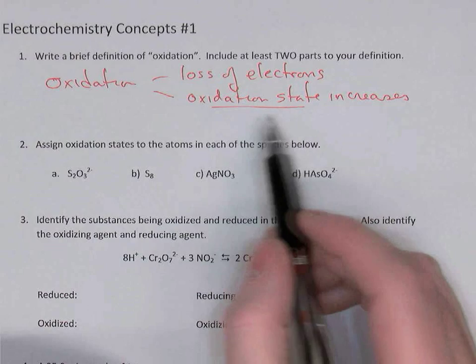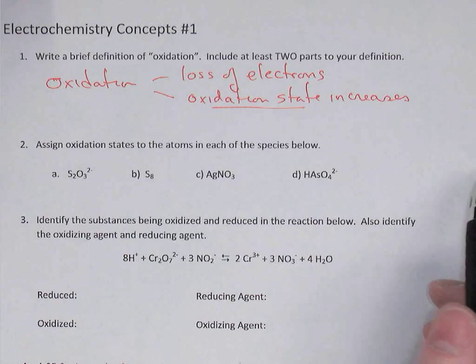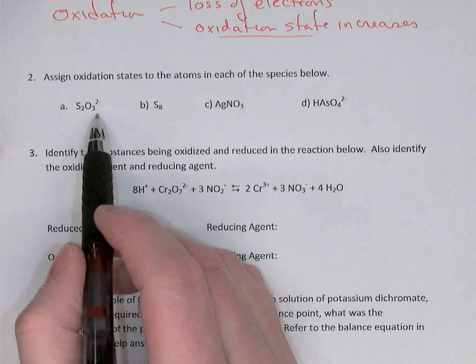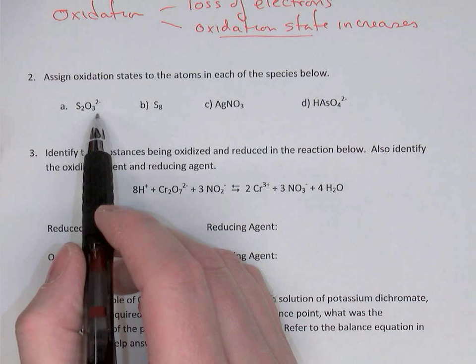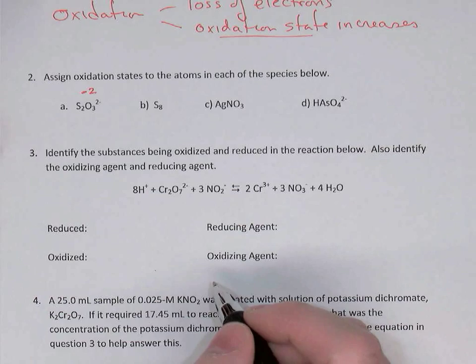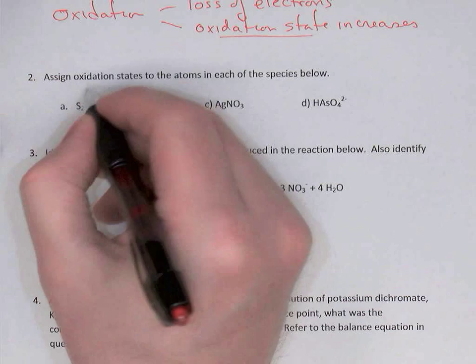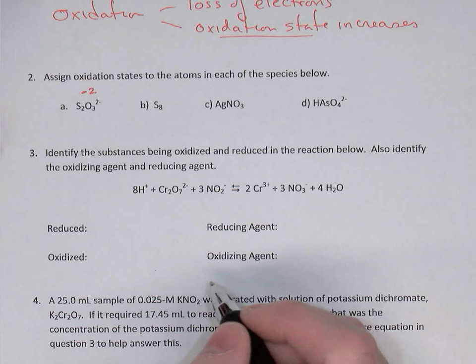Question two: assign oxidation states to each atom in the species below. The first example is S2O3 with a charge of two minus. We know that oxygen in a compound is almost always minus two. So the oxygen there gets an oxidation state of minus two. There are three oxygens, so three times minus two is minus six.